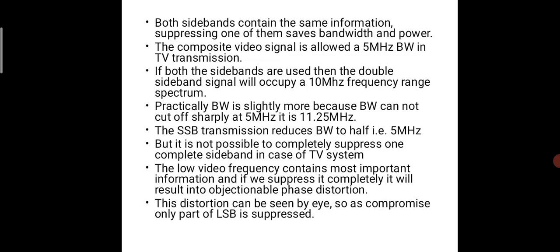Practically, exactly 5 MHz is not a sharp cut-off in any filter. Using the practical filter response, the bandwidth becomes 11.25 MHz. This large bandwidth is not desired, so same sideband transmission reduces the bandwidth to half — down to around 5 MHz.